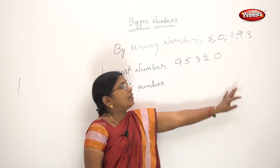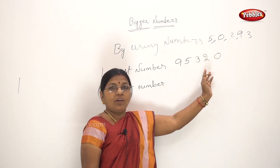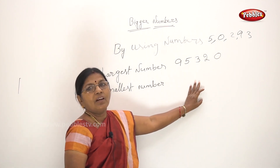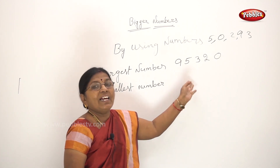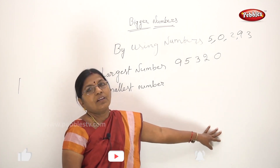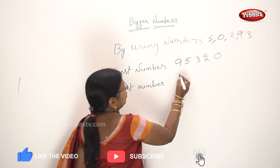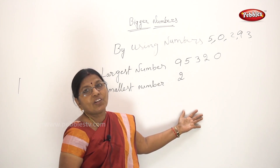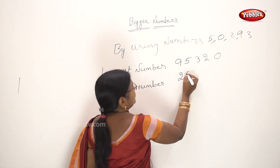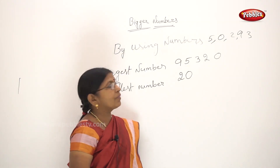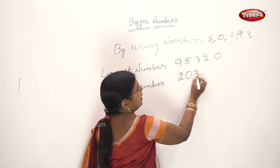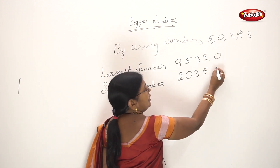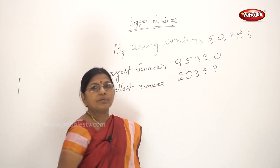What is the smallest number? Can we write 0 first? 0 is the first digit. Now, we look at zero — we place 0 first. Next smallest: 2. Next smallest: 3. Next smallest: 5. Next: 9.